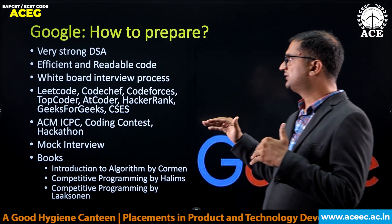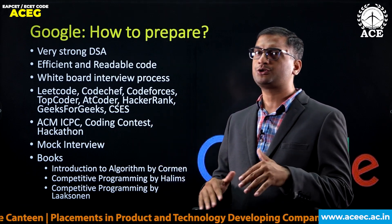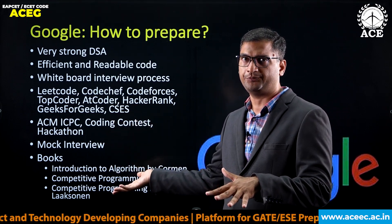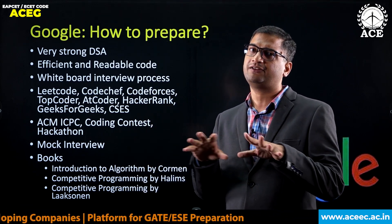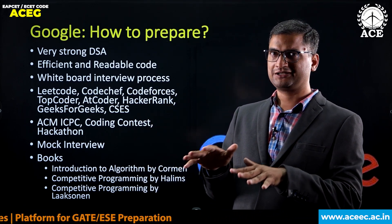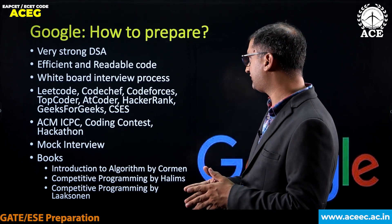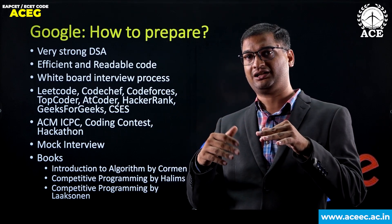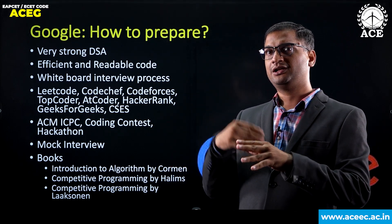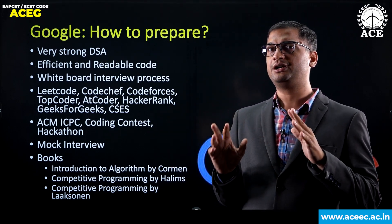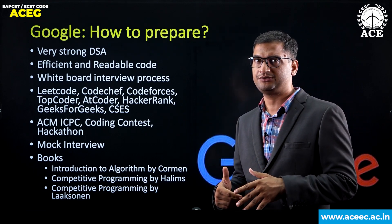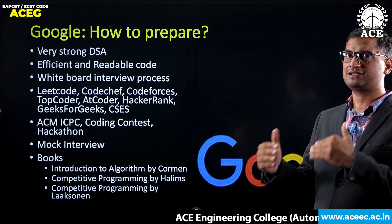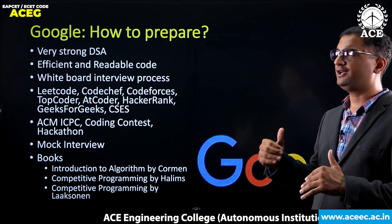Other than that, your code should be very efficient — faster than your competitors' code, working at the fastest possible complexity. It should also be readable, meaning if you write some code, another person should be able to understand what your code is doing, what each variable is doing. Your code should be readable — variables and function names should be written properly.